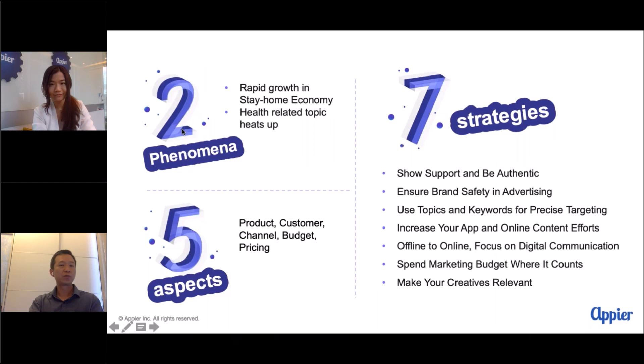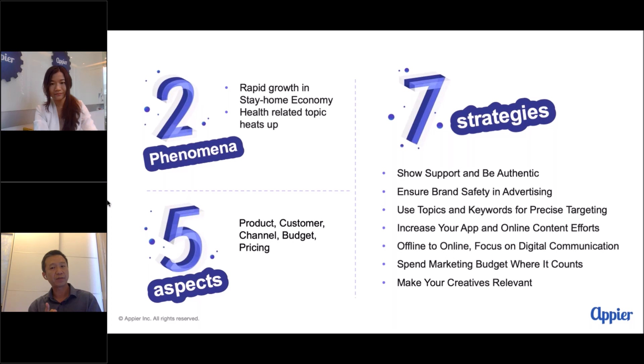To summarize: there are two major phenomena — the stay-at-home economy and health-related issues. Five aspects to always consider: product, customer, channel, budget, and pricing. The seven strategies are: number one, be authentic and show support; number two, brand safety; number three, precise targeting; number four, online content; number five, digital communication; number six, spend money wisely; and number seven, better creatives.